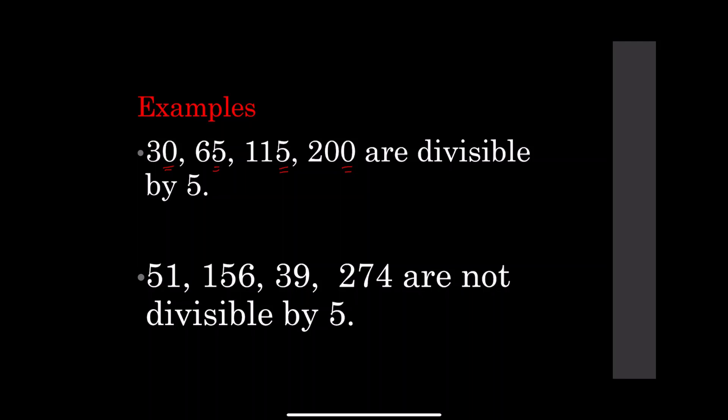...are not divisible by 5. Why? Because 51 ends with 1 which is not 0 or 5, 156 ends with 6, 39 ends with 9, and 274 ends with 4. So they are not 0 or 5.